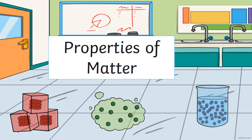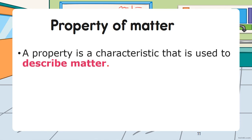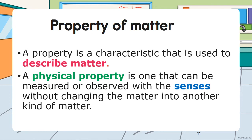Now let's look at the properties of matter. A property is a characteristic that is used to describe matter. A physical property is one that can be measured or observed with the senses without changing the matter into another kind of matter.